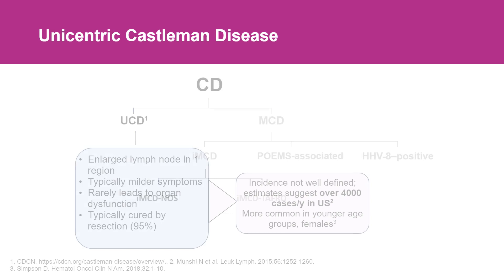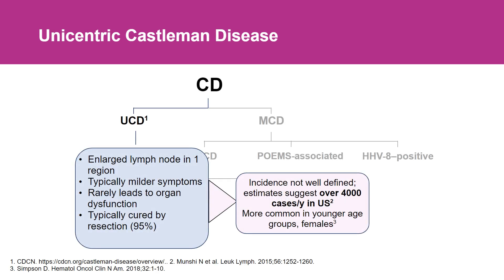One form of Castleman disease is what's called unicentric Castleman disease, where there's a single region of enlarged lymph nodes, and these patients can have mild to moderate clinical and laboratory abnormalities.